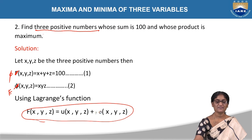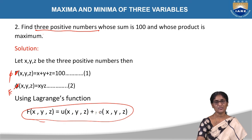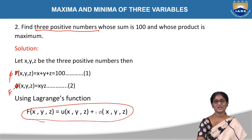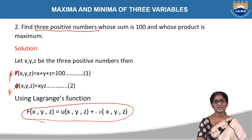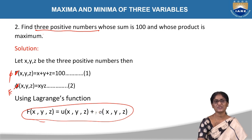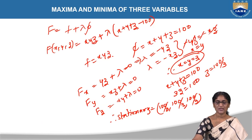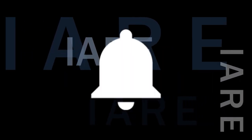Lagrange's method is the easiest method for finding maximum and minimum for three variables. Alternatively, you can eliminate one variable from the condition and convert the three-variable problem to a two-variable problem. The second method is more elaborate because it not only finds the stationary points but also proves whether the function is maximum or minimum at those points — something Lagrange's method cannot do. Thank you all — like, share, and subscribe, and hit the bell icon for more updates.